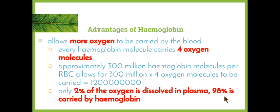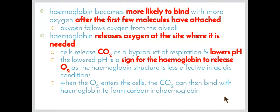Only 2% of oxygen is dissolved in the plasma, which is an extremely small percentage, versus the 98% that can be carried in the hemoglobin. The second advantage is that hemoglobin becomes more likely to bind with oxygen once the first few molecules have attached. When the first oxygen molecule attaches itself to the hemoglobin, its structure changes slightly, meaning more oxygen molecules can attach more easily. This ensures that more oxygen can leave the alveoli, enter the blood, head to the cells, and carry out respiration.